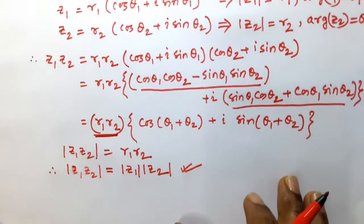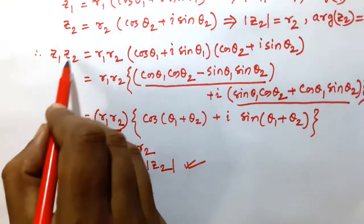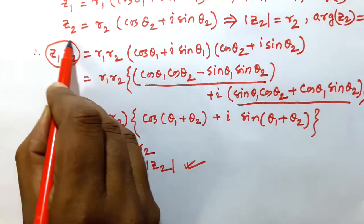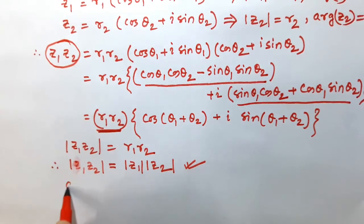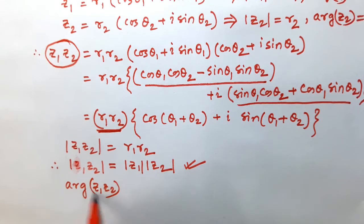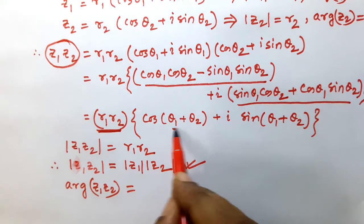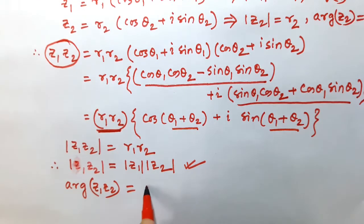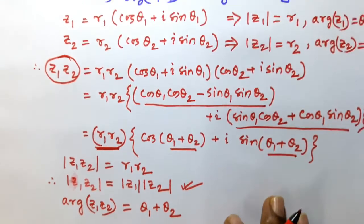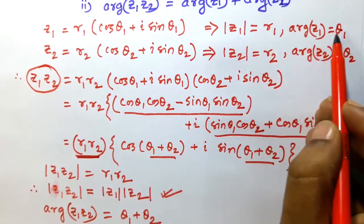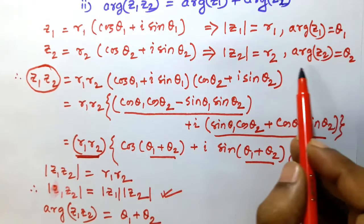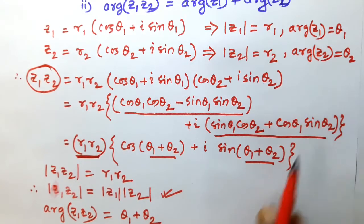Now again, what is the argument of this complex number? Arg of Z1 Z2 is equal to the angle, that is θ1 plus θ2. Now θ1 is the argument of Z1, and θ2 is the argument of Z2.